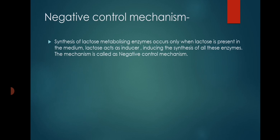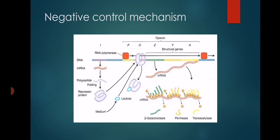There is a negative control mechanism here. The synthesis of the lactose metabolizing enzymes occurs only when lactose is present in the medium; lactose acts as an inducer. In the schematic diagram, RNA polymerase attaches to the DNA strand, mRNA is synthesized, and a polypeptide chain is formed to produce repressor protein. The repressor protein has a binding site to the operator gene, and structural genes Z, Y, and A synthesize beta-galactosidase, permease, and transacetylase.